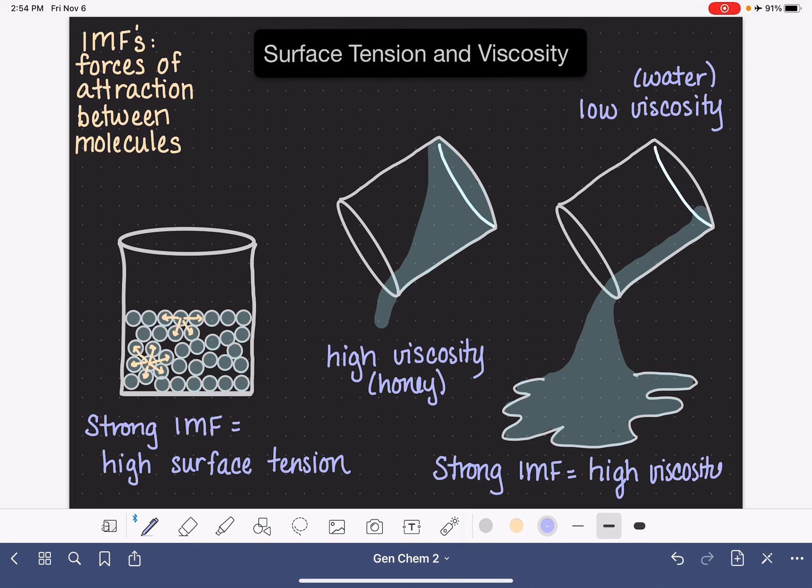In order for us to be able to pour these molecules out, we do have to kind of break the little intermolecular forces that they are experiencing with each other. And so being able to successfully and easily separate these molecules from each other to get them to pour right out, that's a key component of having a high or low viscosity.